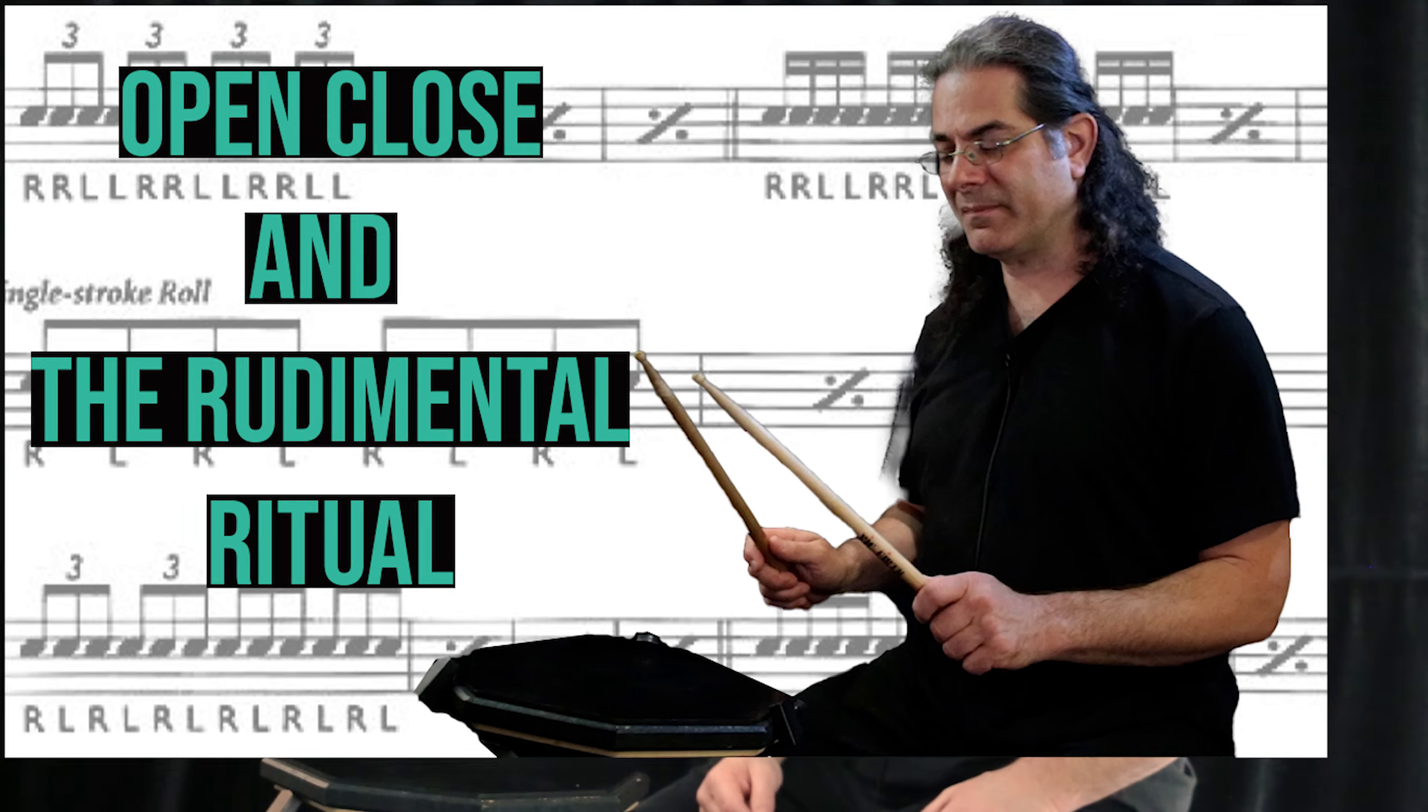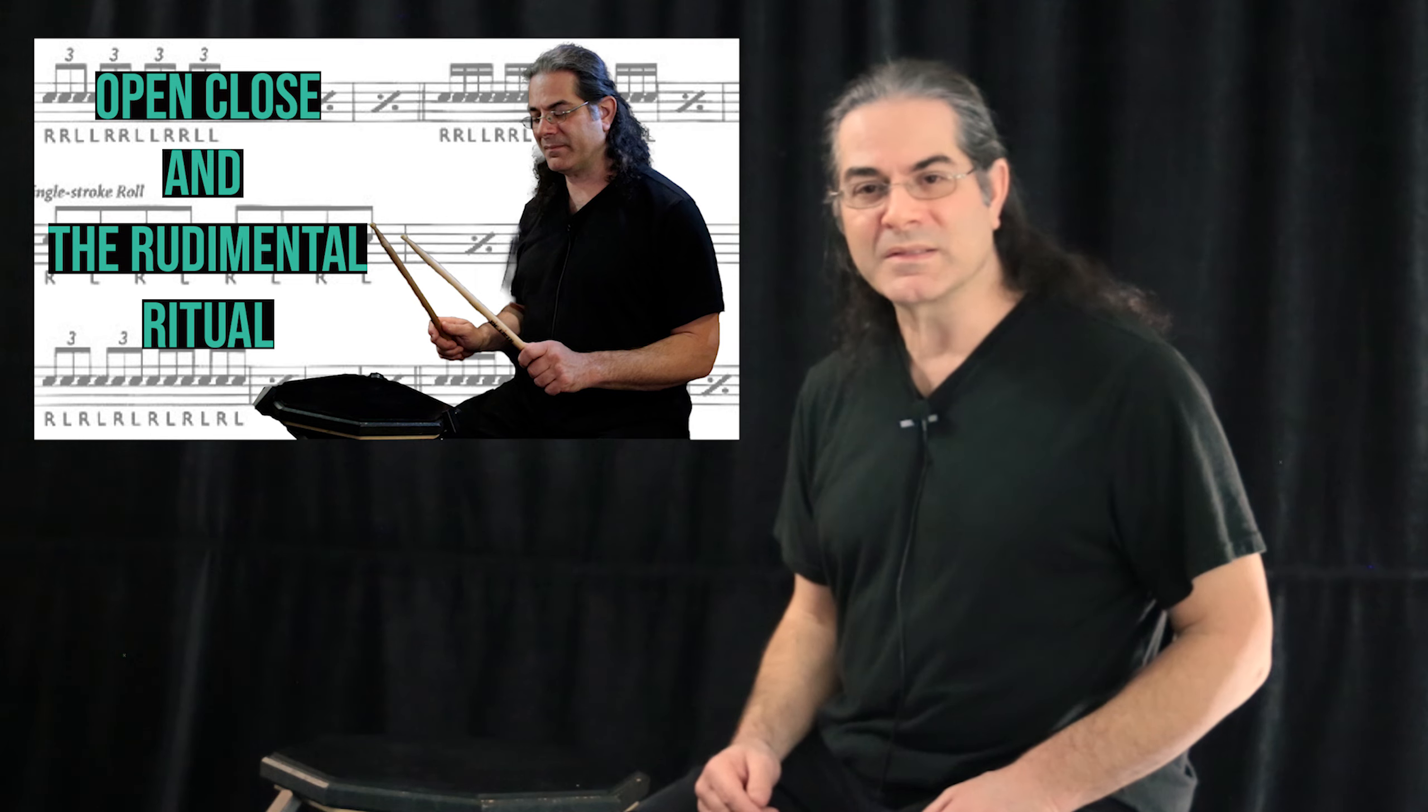To continue morphing the six-stroke roll change the discrete doubles to interwoven singles. I talked more about the mechanics of interwoven singles in my first video of the series open close and the rudimental ritual so check that one out for more on this topic.